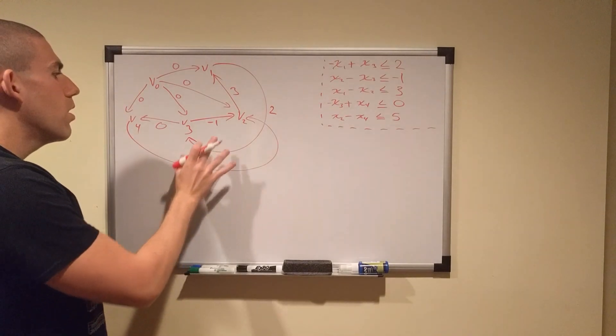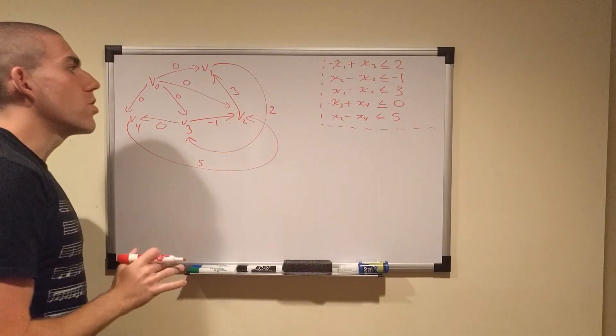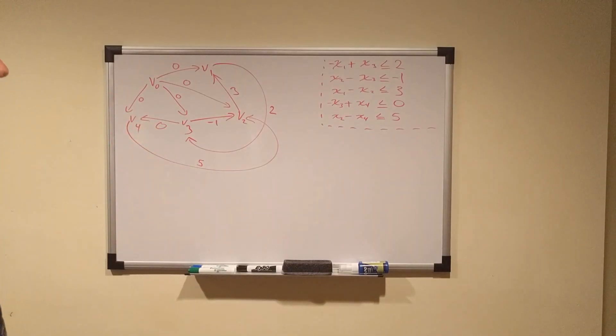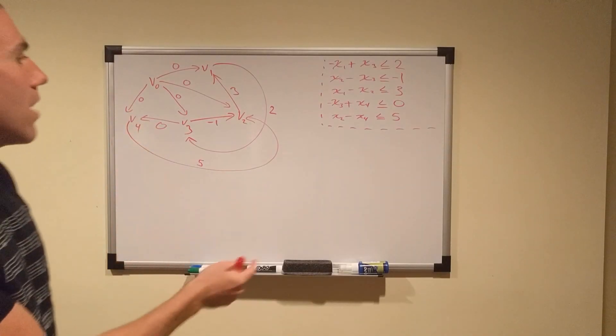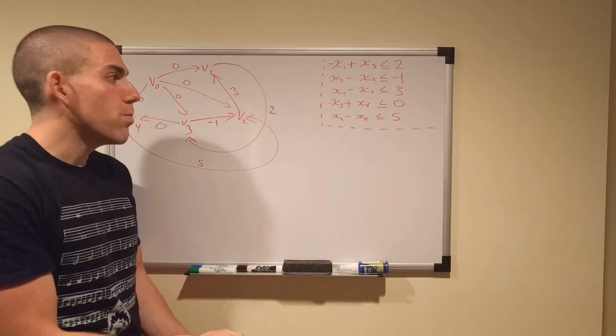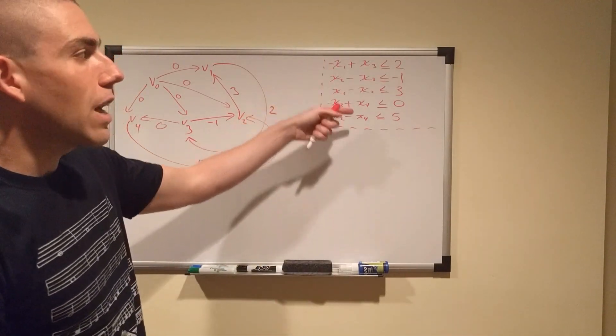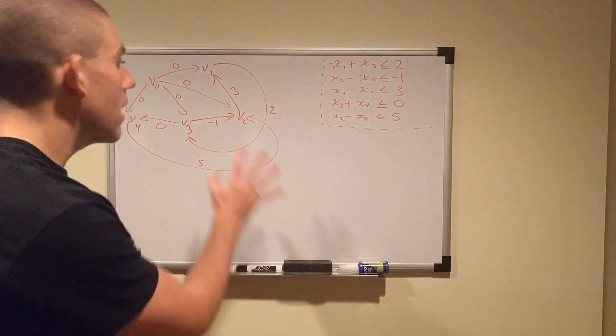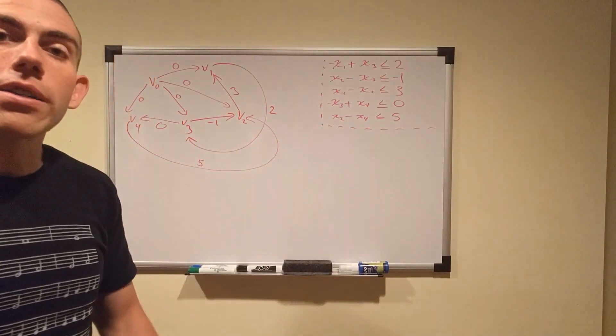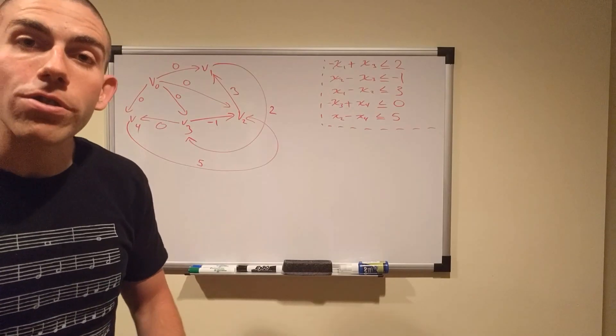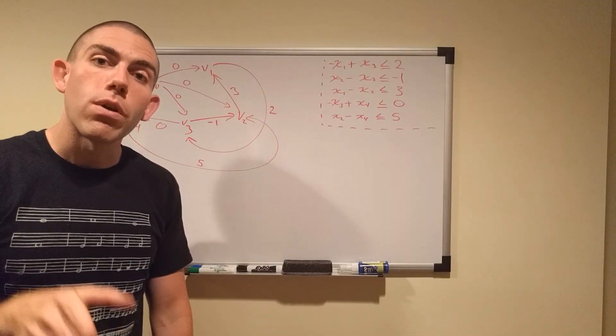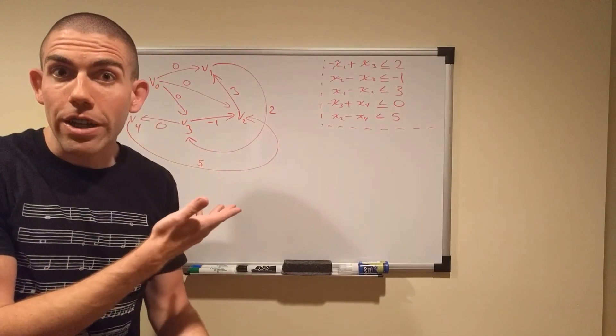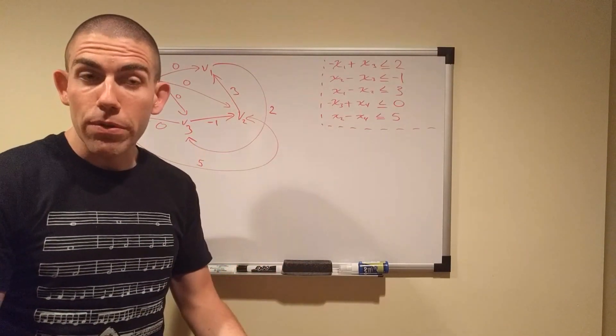And now, first thing we want to do is determine whether or not this system is feasible. How do we tell it's feasible? Well, if it has a negative cycle, then that means that we cannot find a solution set for these Xs such that these inequalities always hold true. So, if it has a negative cycle, we can write it off right away and say it's not feasible to find a solution set for this. So, what shortest path algorithm would we want to use to check and determine whether or not a given graph has a negative cycle? That would be Bellman-Ford.